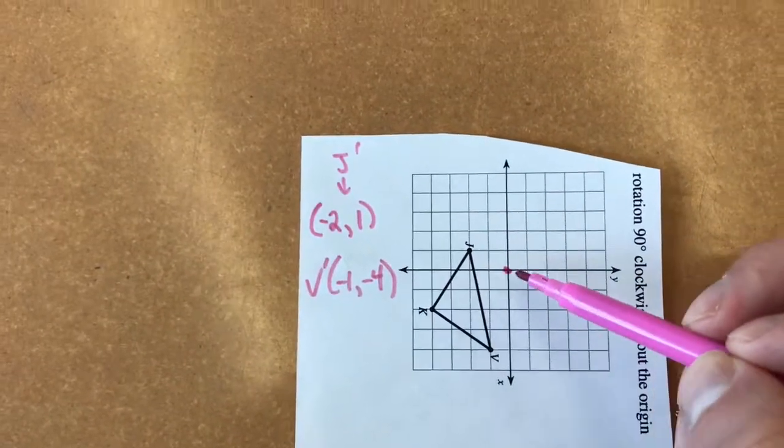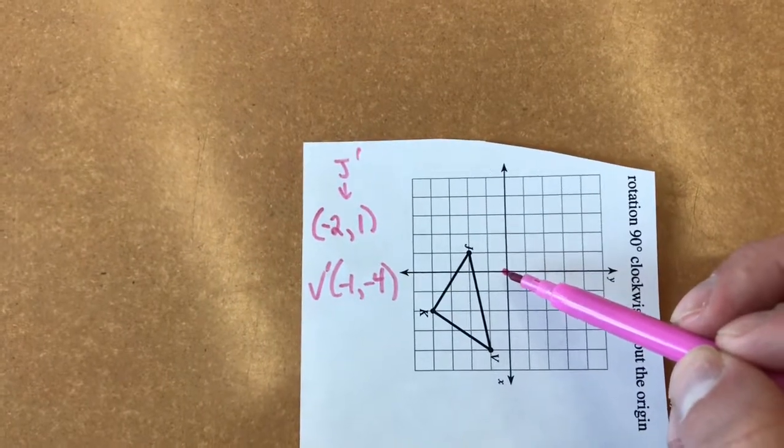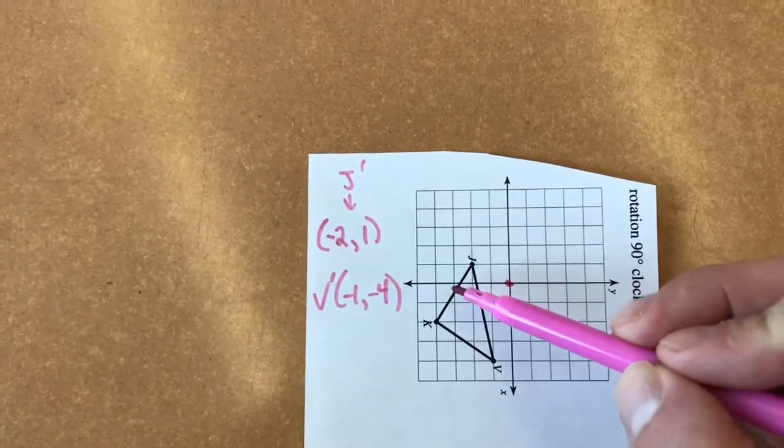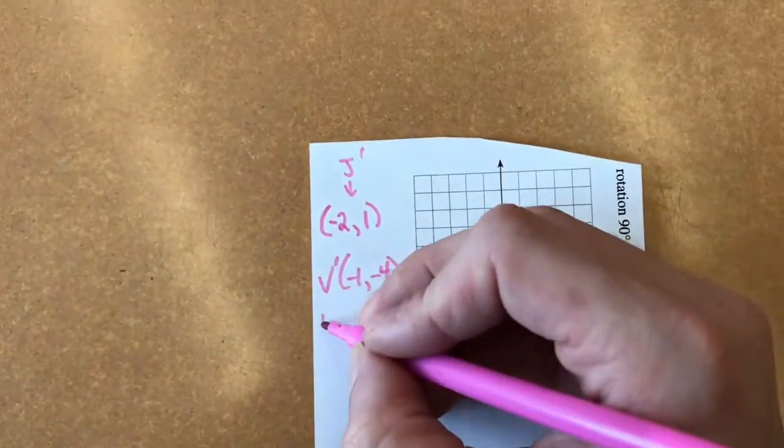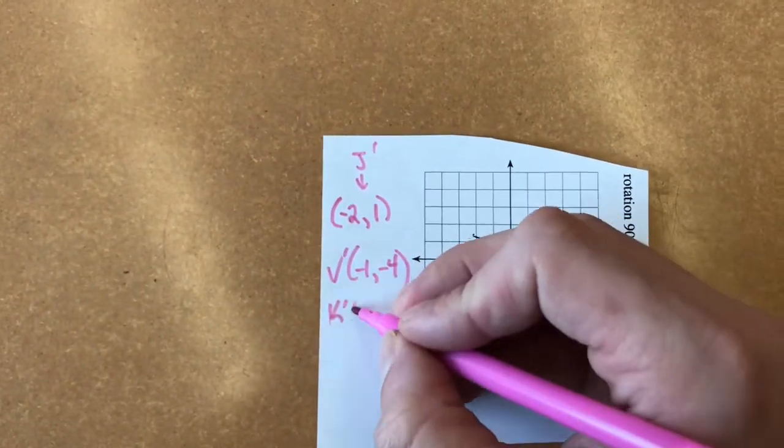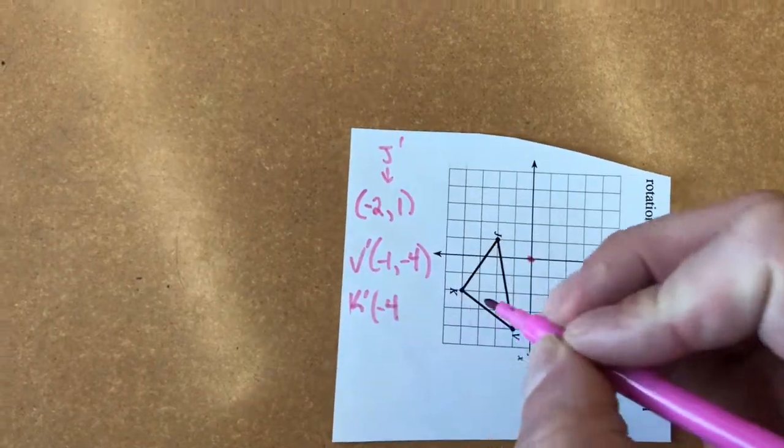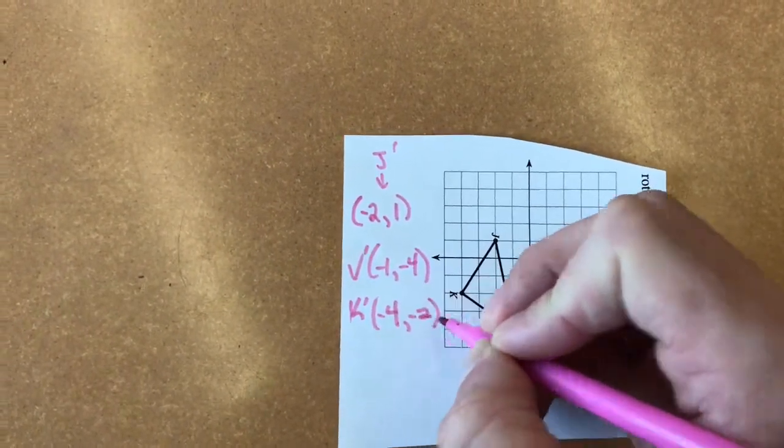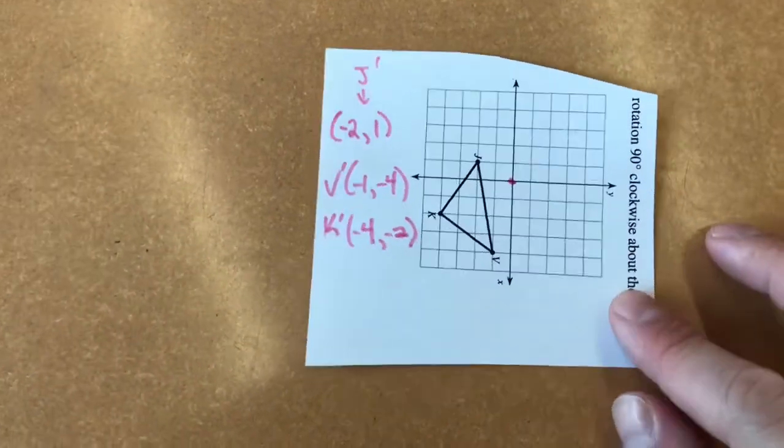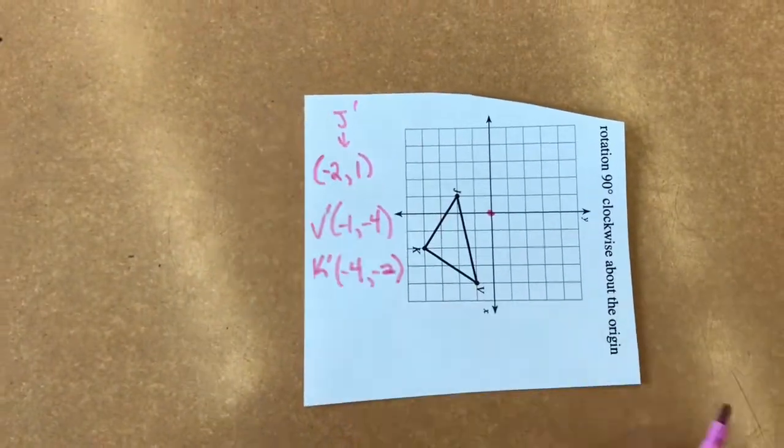Finally, we have K. So I'm going to call it K prime, which is left one, two, three, four, down one, two. So K prime is going to be left four, negative four, down two, negative two. Pardon the sloppiness of that handwriting. I'm holding a camera in my other hand.